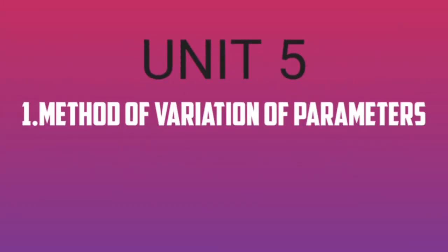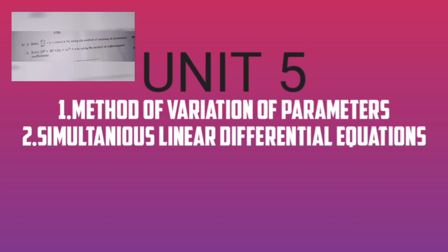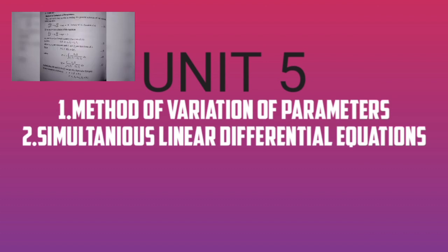Unit 5 starts with the basics — CF and PI. The Method of Variation of Parameters is a fundamental method using CF and PI. You can see all the details there.